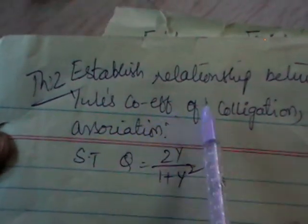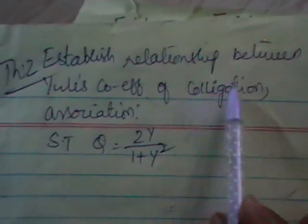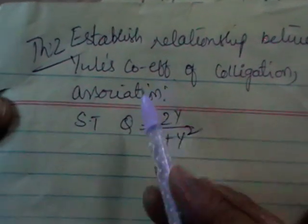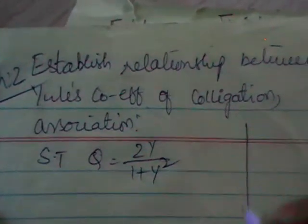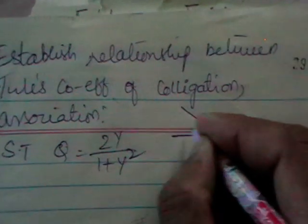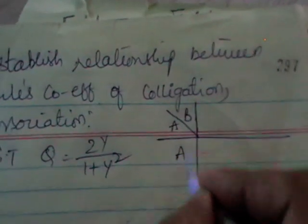Next theorem attributes is the relationship between Yule's coefficient of association and colligation. We know that all these are for dichotomous population, that is attributes involving number of attributes are 2.